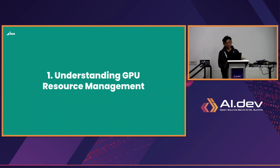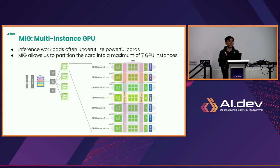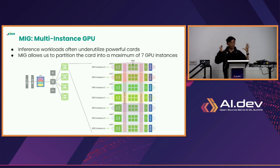First, understanding GPU resource management — specifically multi-instance GPU (MIG). The idea is that when you get these big, powerful cards, they come with a lot of resources. But when you're running inference with a smaller model, you don't actually need the full power of the card. MIG allows you to take this big GPU and shard it into smaller GPUs — up to a maximum of seven GPU instances.